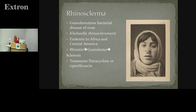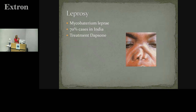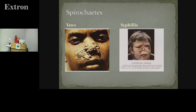These next conditions are much more rare. Rhinoscleroma is a very unusual atrophic condition caused by Klebsiella — I've only seen one case and it's very difficult to manage, but long-term treatment is with ciprofloxacin. Leprosy: I've never come across any cases at all. Spirochetes and syphilis — hopefully now much less common.